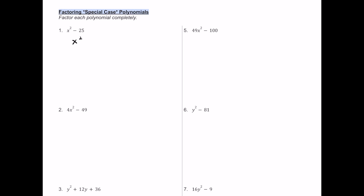For number one we have x squared minus 25. There are two types of special cases: difference of squares and perfect square trinomials. This is an example of a difference of squares — we're subtracting, and we need to check if these are perfect squares. The square root of x squared is x and the square root of 25 is 5. When you factor a difference of squares pattern it always factors into two binomials — one is the sum of their square roots and one is the difference of their square roots. That's why it's a special case; it's very straightforward if you notice the pattern.